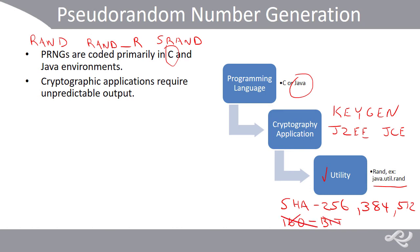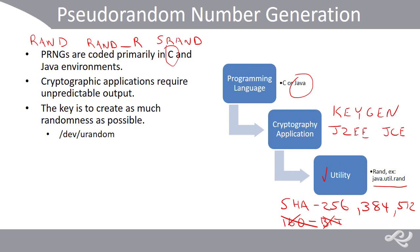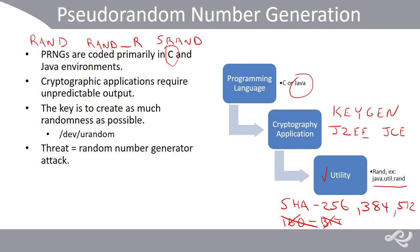The key is to create as much randomness as possible. To this effect, we can use the /dev/random or /dev/urandom file for a higher level of entropy, utilizing noise on the system — especially hardware noise. We can also call the randomize function before calling RAND and use strong cryptographic ciphers such as AES or higher, and SHA256 for the hash function. One of the threats to PRNGs is the random number generator attack, which subverts or exploits weaknesses in PRNGs.